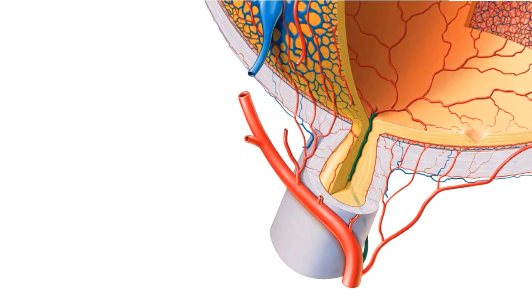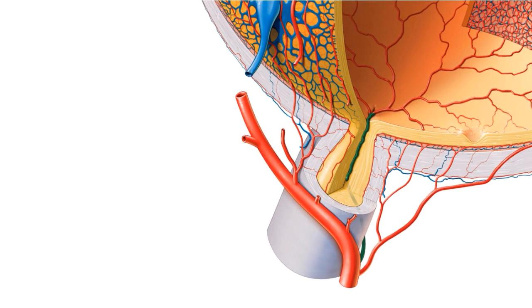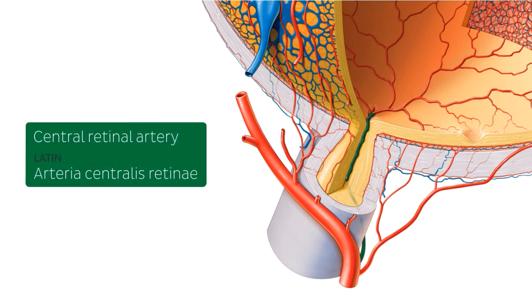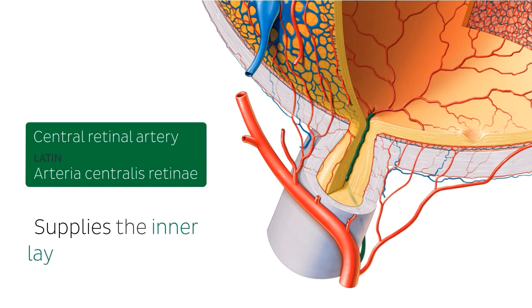The first ocular branch of the ophthalmic artery is shown here in green and is called the central retinal artery. As we can see in this image, the central retinal artery runs inferior to the optic nerve before taking a turn superiorly and penetrating the optic nerve. This artery supplies the inner layers of the retina.